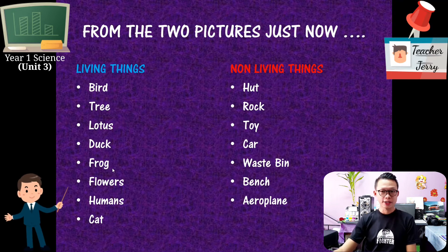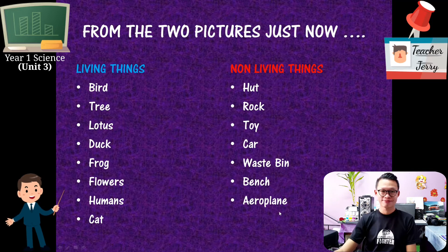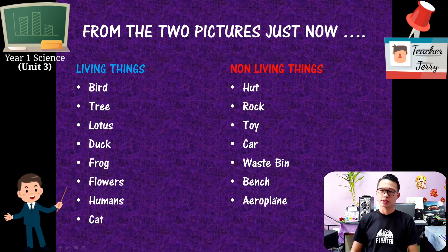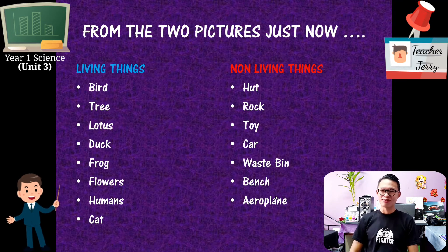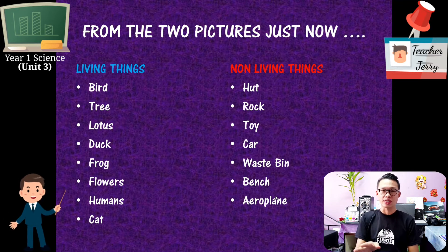How about non-living things? We have hut, rock, toy, car, waste bin, bench, and airplane. You may ask: Teacher, how do we know which one is a living thing and which one is a non-living thing? I have some tips for you. After this slide, I'm going to show you how to identify living things and non-living things.